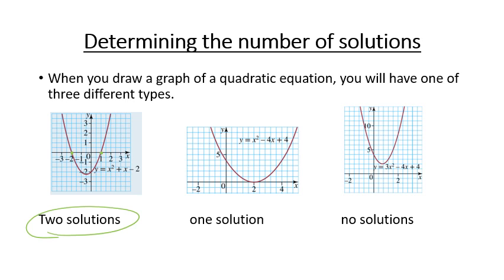So obviously that's going to have two solutions. In our middle graph, it only crosses, it just touches the x-axis at one spot. So this means we've got one solution, because it only gets close at one spot.